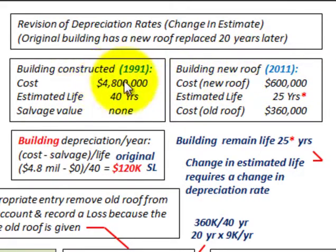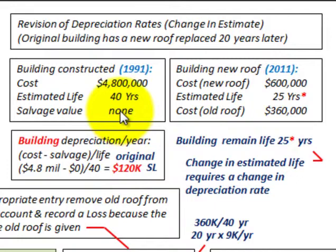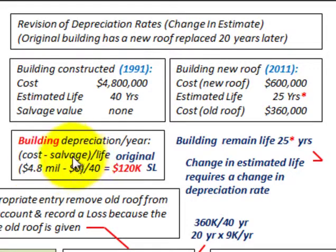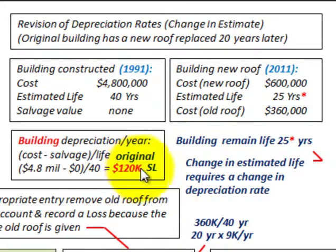The building's original cost is $4,800,000, estimated life 40 years, and estimated salvage value of $0. For our depreciation on a straight-line basis, we have the cost of $4,800,000 less salvage value of $0, divided by the original life of 40 years. We come up with a depreciation rate of $120,000 per year.